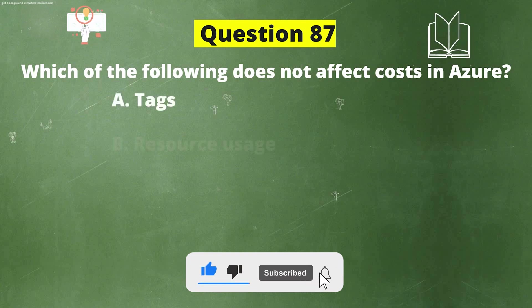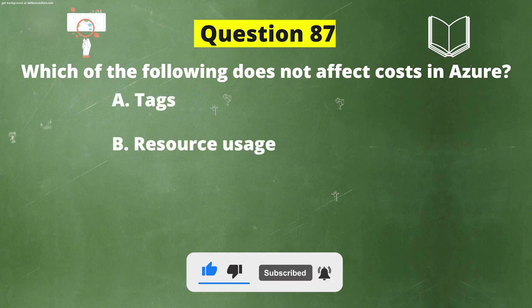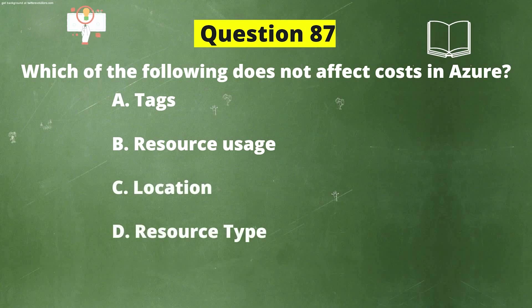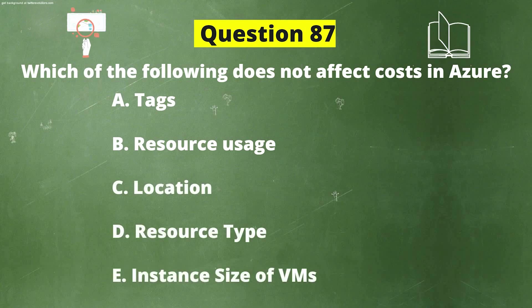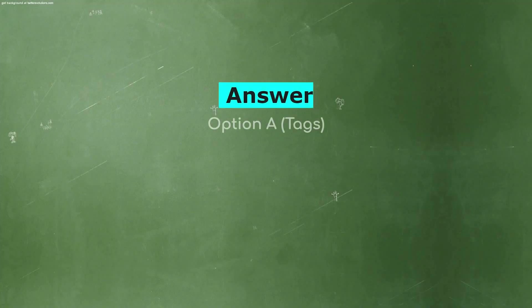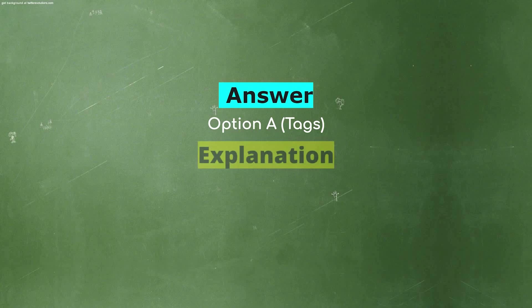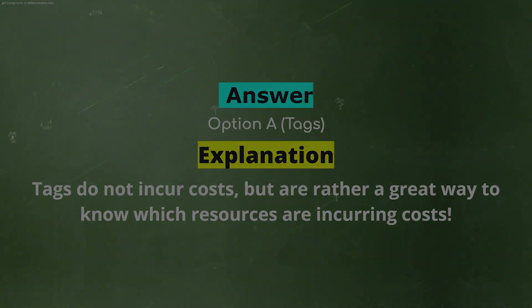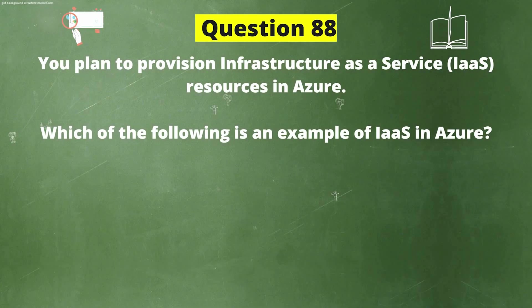Next question: Which of the following does not affect cost in Azure? Option A: Tags. Option B: Resource usage. Option C: Location. Option D: Resource type. Option E: Instance size of VMs. The correct answer is Option A, Tags. Explanation: Tags do not incur cost but are rather a great way to know which resources are incurring cost.